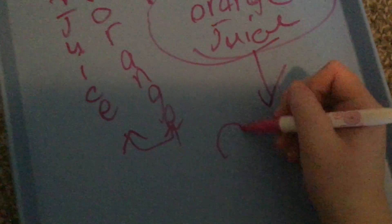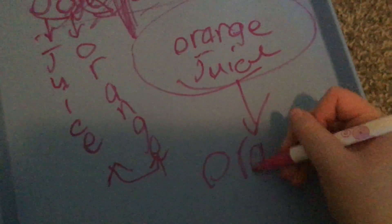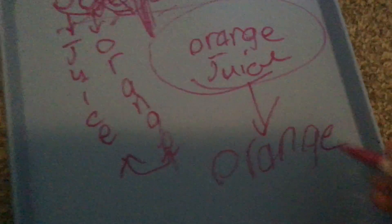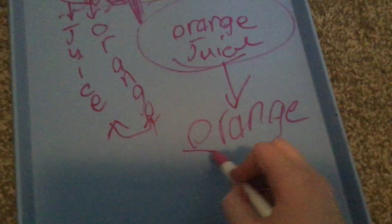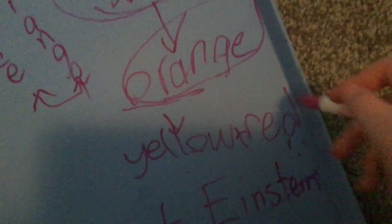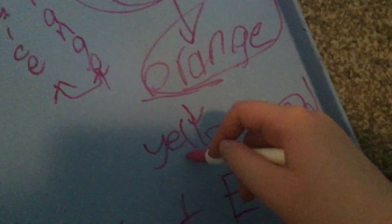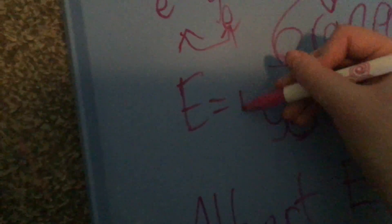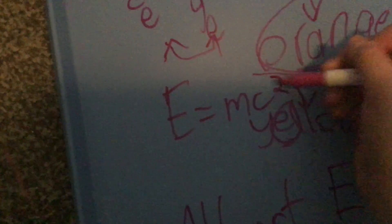And what is the color of orange juice, you may ask? Well, that would, of course, be orange. And the two colors that make up orange are yellow and red. And as you can see, the only letter that these two colors have in common is E. And we all know from the famous thing, E equals MC squared. And who made that up? Albert Einstein.